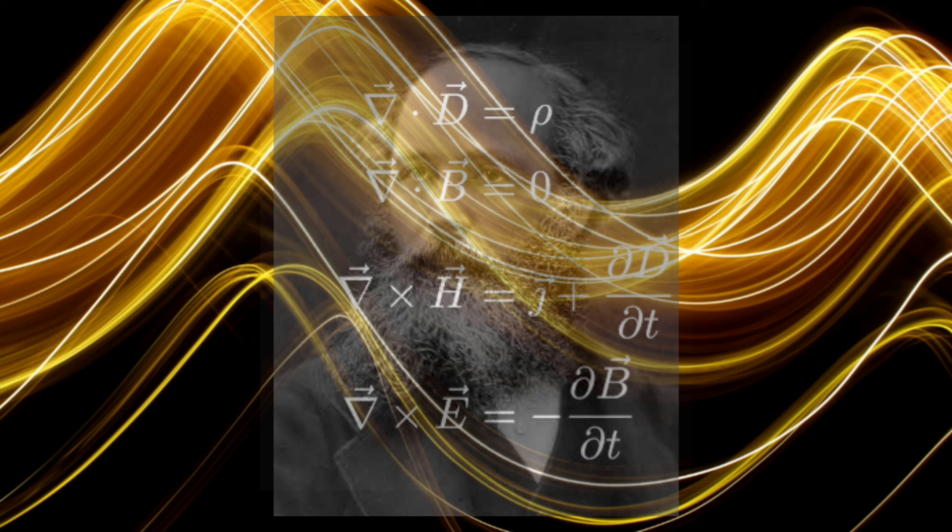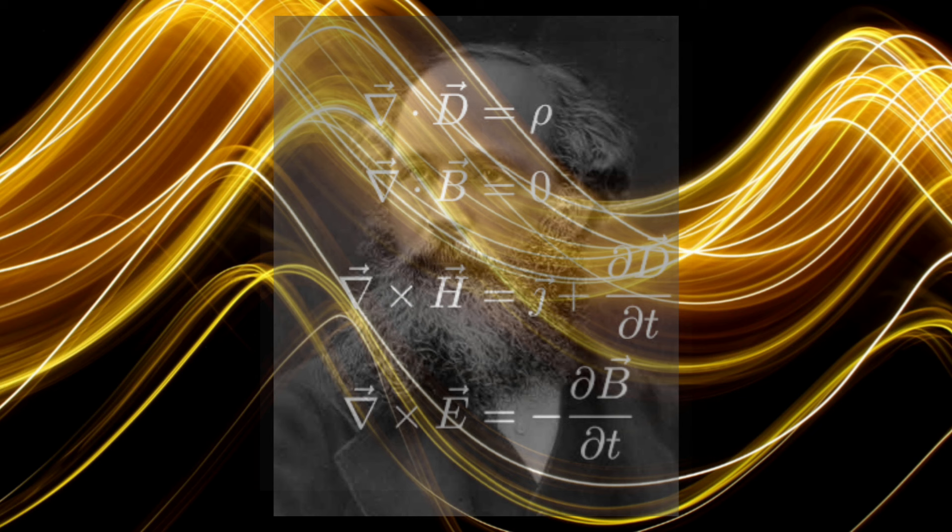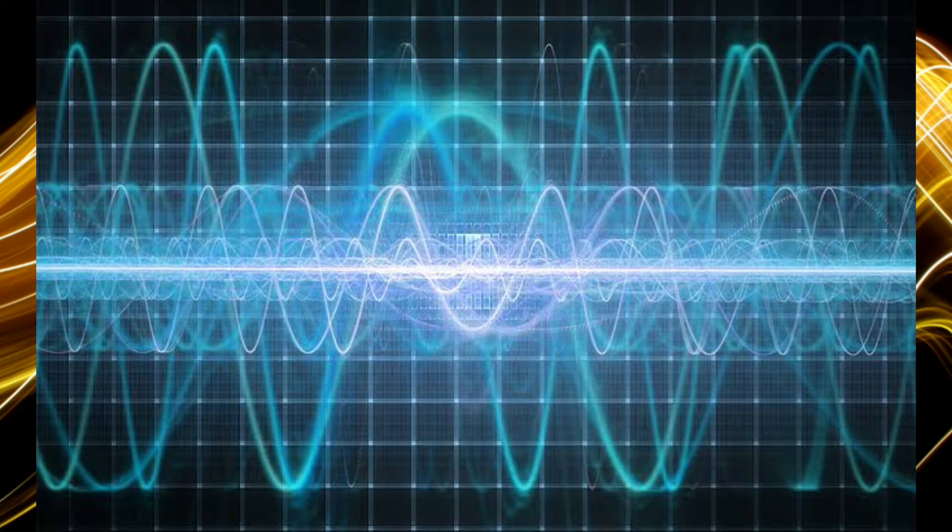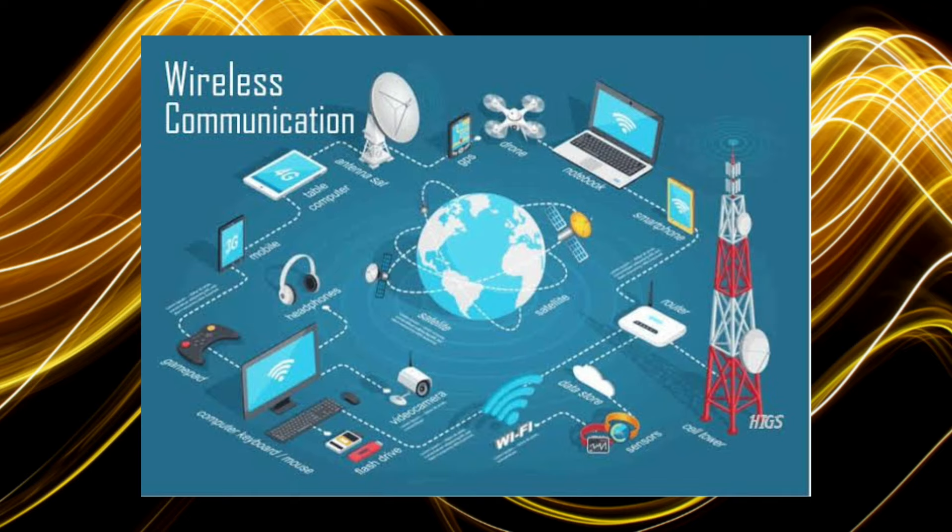8. Electromagnetic Waves. In his equations, Maxwell realized that they predicted the existence of electromagnetic waves. He concluded that light itself was an electromagnetic wave, a revolutionary idea that unified optics with electromagnetism. This insight connected the fields of electricity, magnetism, and light, paving the way for later breakthroughs in communication technology and wireless transmission.